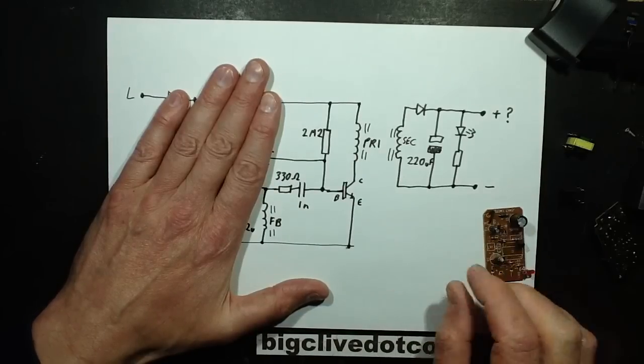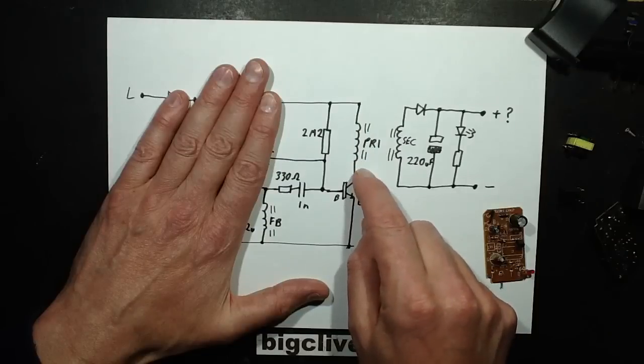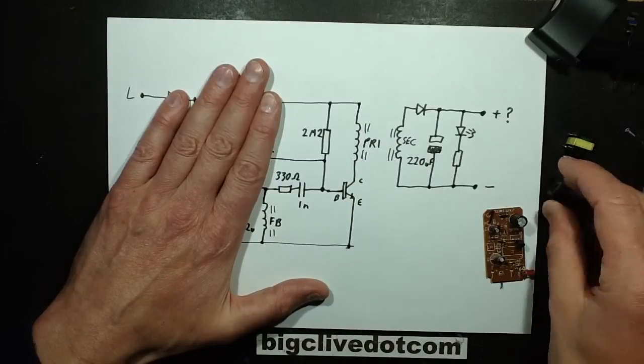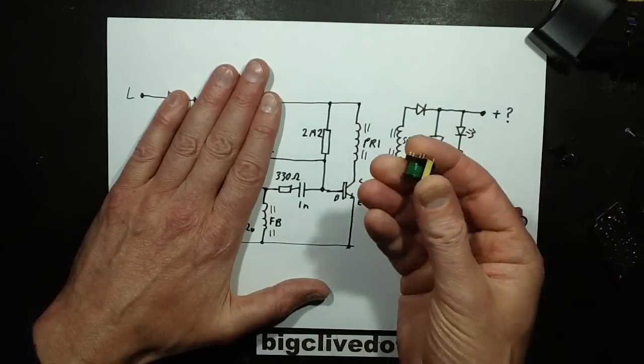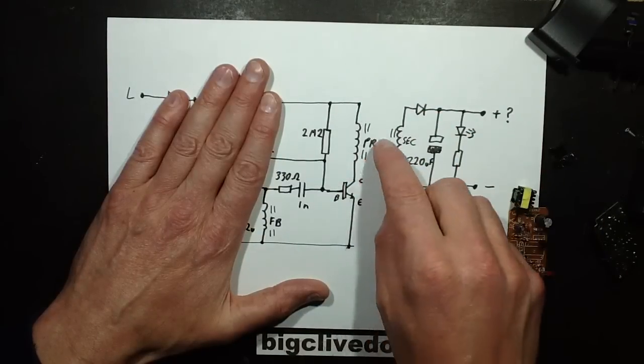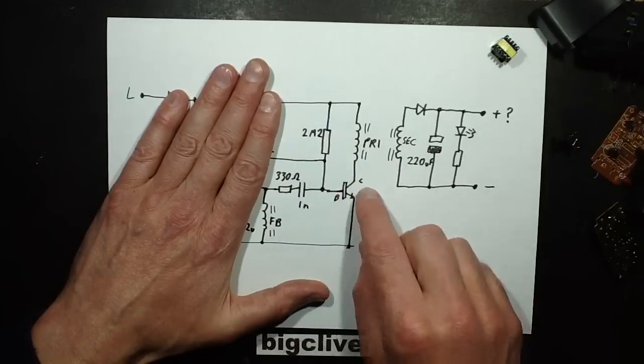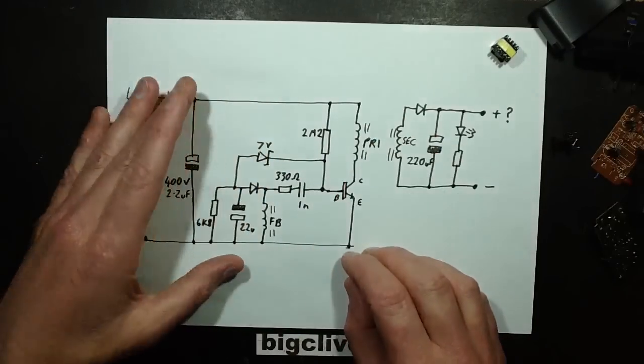And basically it will drive on until the inductor, the actual transformer, the core is saturated with a magnetic field and it can't take any more magnetic field. And then the current will stop being coupled across and then it will sort of collapse and it will go into reverse and it will kind of discharge and turn itself off again.